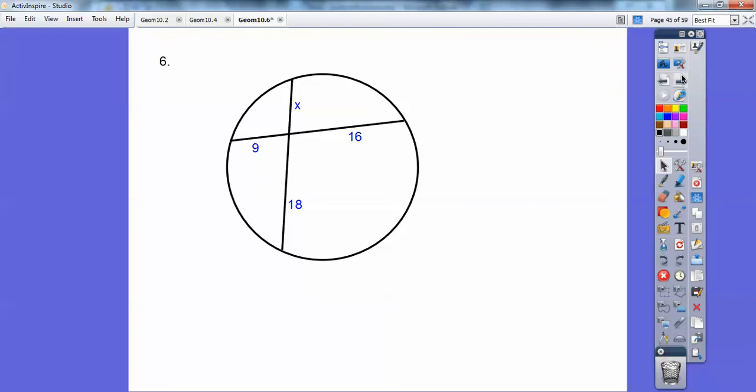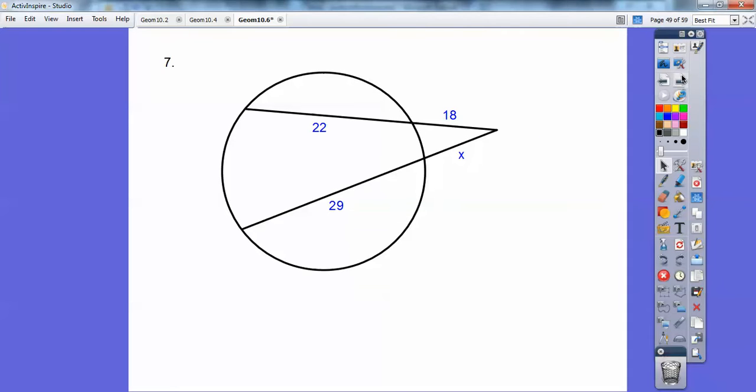Piece times piece, piece times piece. So 18 times X equals 9 times 16. 18 goes into 144 eight times.